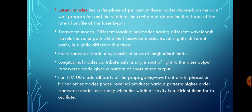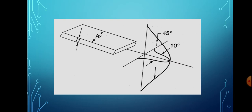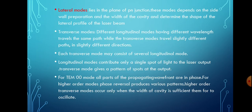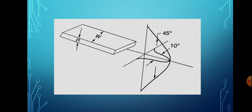The lateral mode lies in the plane of the P-N junction. These modes depend on the sidewall preparation and the width of the cavity. Lateral modes also depend on the shape of the lateral profile of the laser beam and travel along the second side of the laser beam.